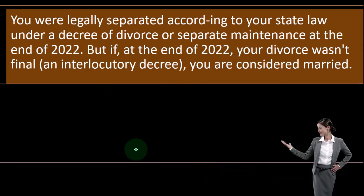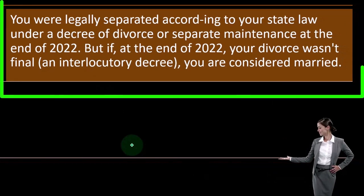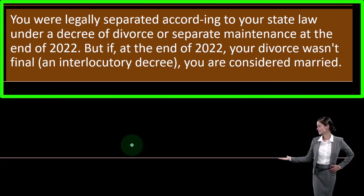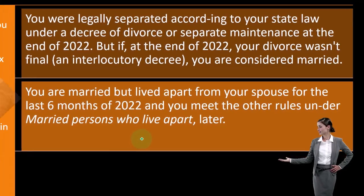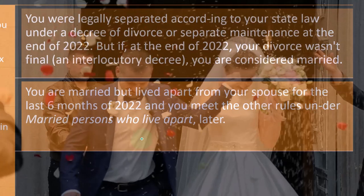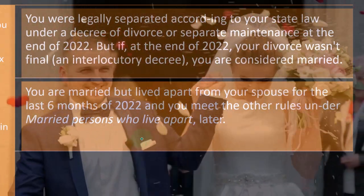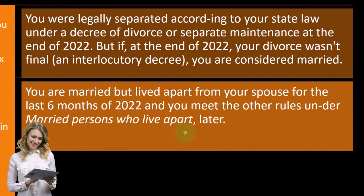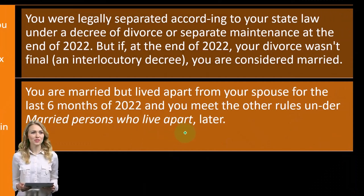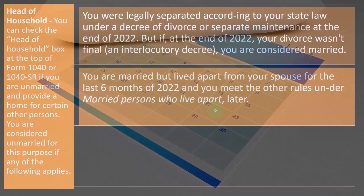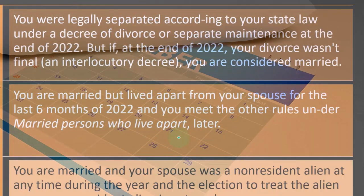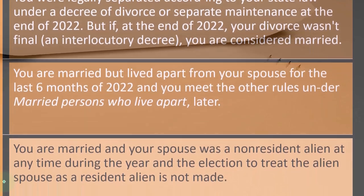If at the end of 2022 your divorce wasn't final — an interlocutory decree — you are considered married. However, if you were married but lived apart from your spouse for the last six months of 2022 and meet the other rules under married persons who live apart, that's a gray area where you might still qualify to file head of household. You can dive into more detailed rules if you're in that situation.